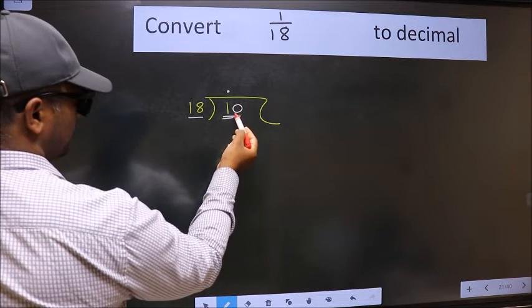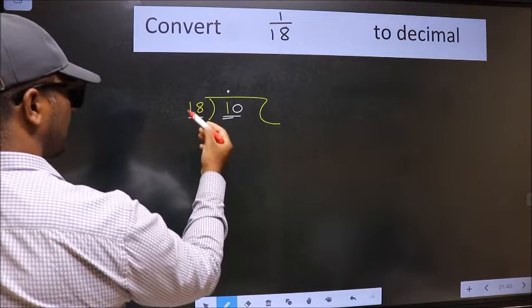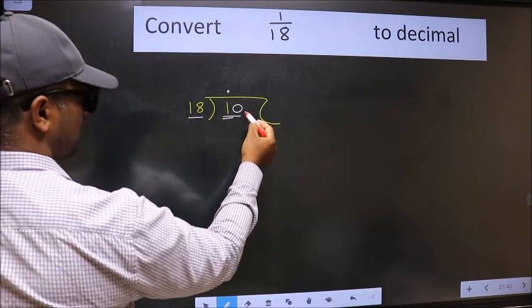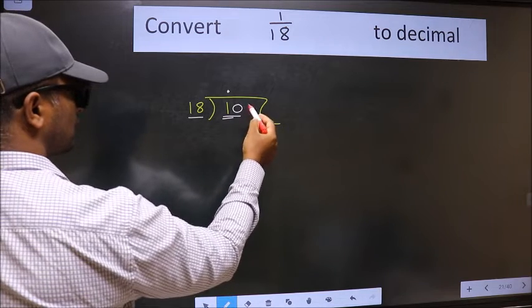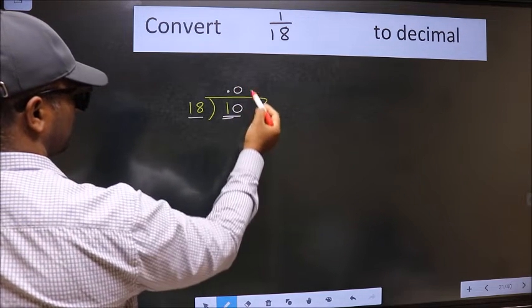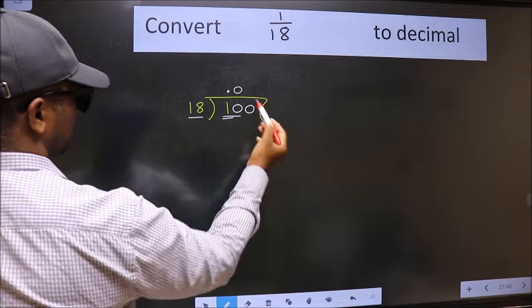Now, 10. 10 is again smaller than 18. So, we should get one more 0 here. And the rule to get one more 0 here is put 0 here. Then only we can get 0 here.